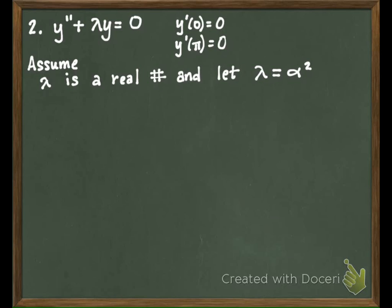So our equation becomes y double prime plus alpha squared y equals zero. That means our characteristic equation is r squared plus alpha squared, and so r will equal plus or minus alpha times i.